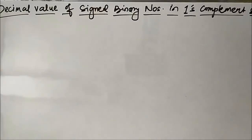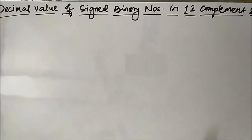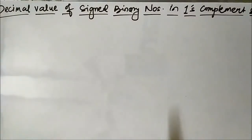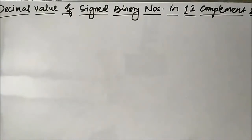Hello friends, welcome to Engineering Tutorial. In my previous video, we discussed about determining the decimal value of a signed binary number represented in sign magnitude system. In today's video, we are going to discuss the same concept, but here the signed number will be represented in 1s complement system and we have to determine the equivalent decimal value.